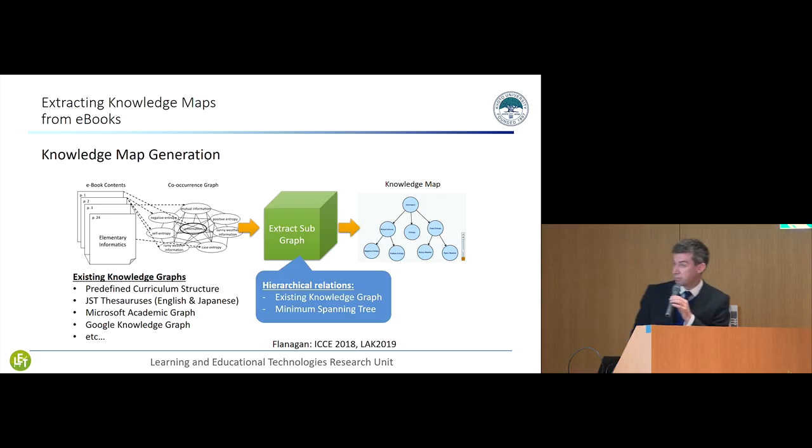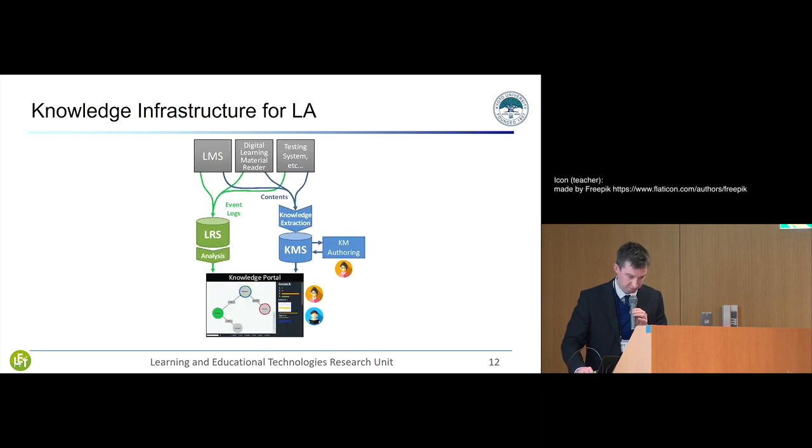One way that we can do this is by basically treating an e-book as a set of documents and we can create a co-occurrence graph from that. Currently I use two different methods, either by referencing an existing knowledge graph, say a thesaurus or Google knowledge graph or Microsoft academic graph, or another method is by using minimum spanning tree algorithm to make a simple graph out of the complex co-occurrence graph.